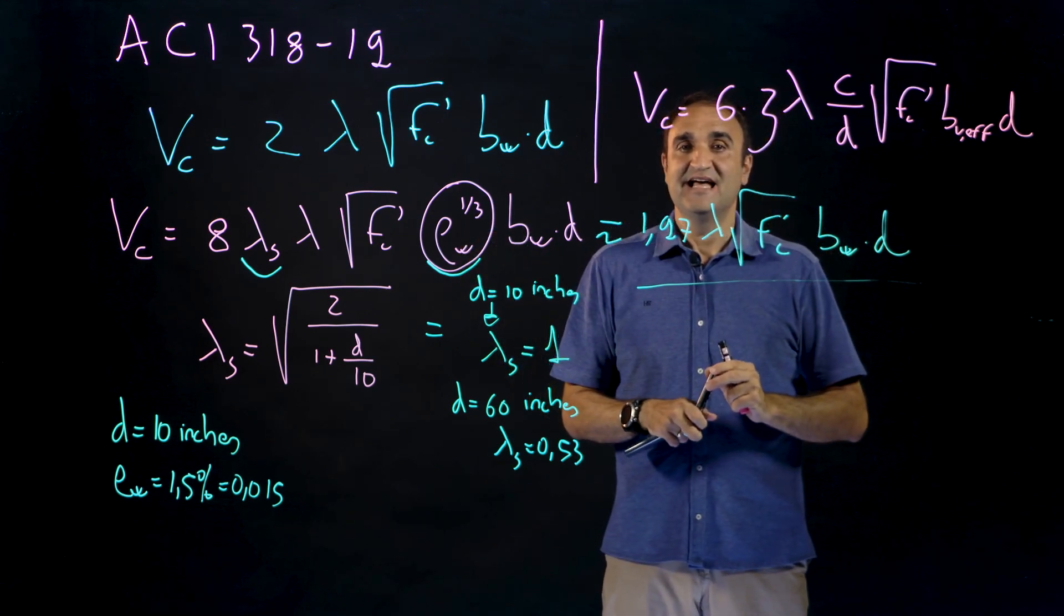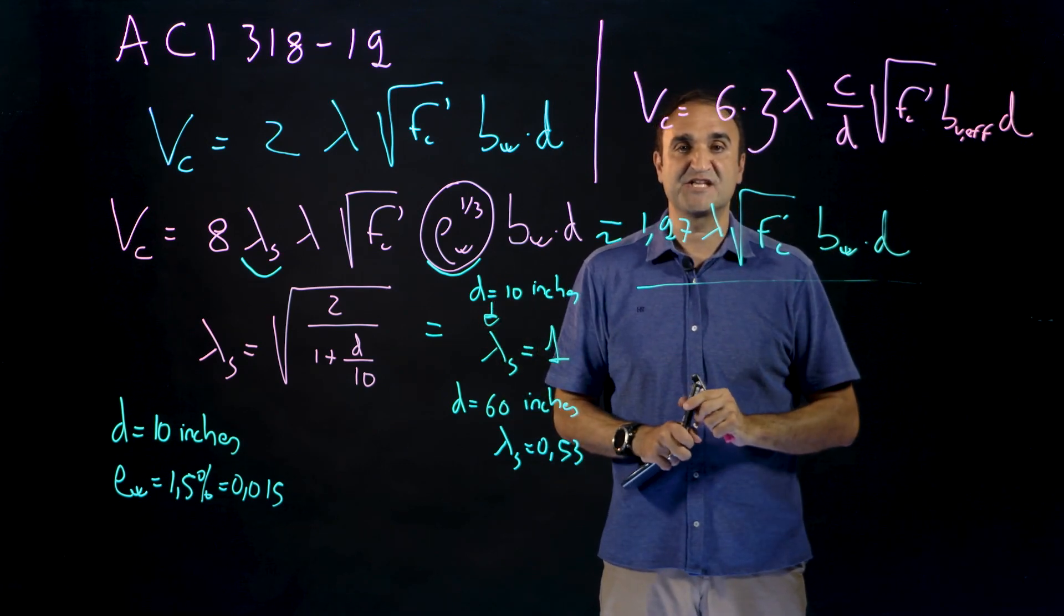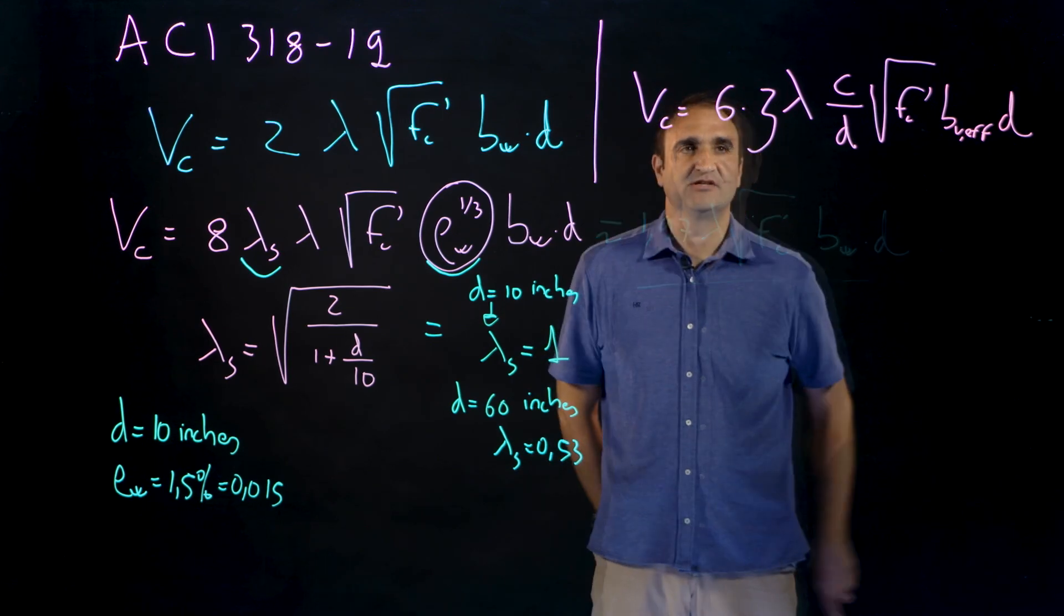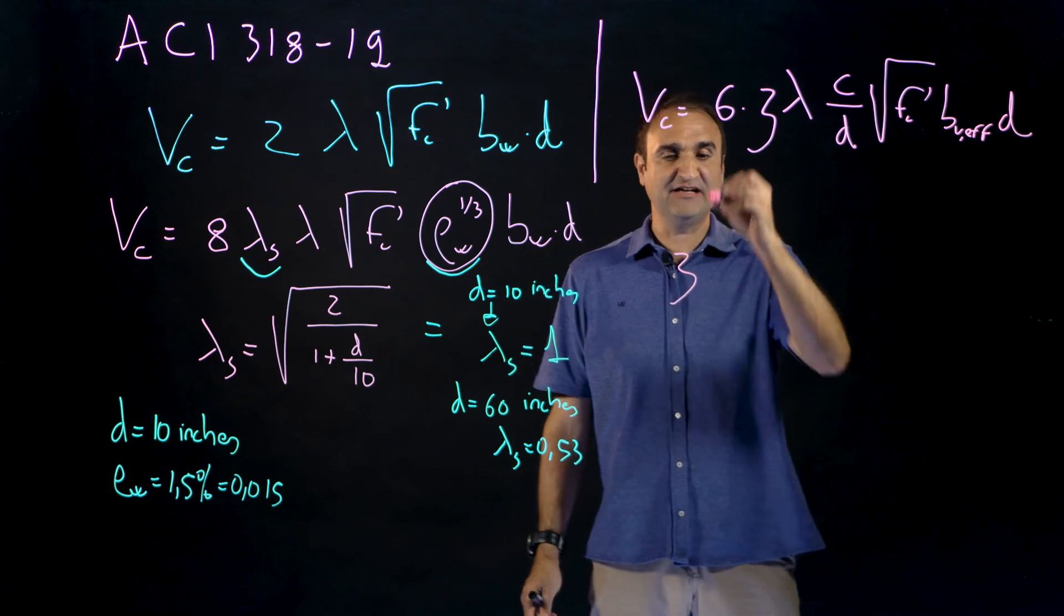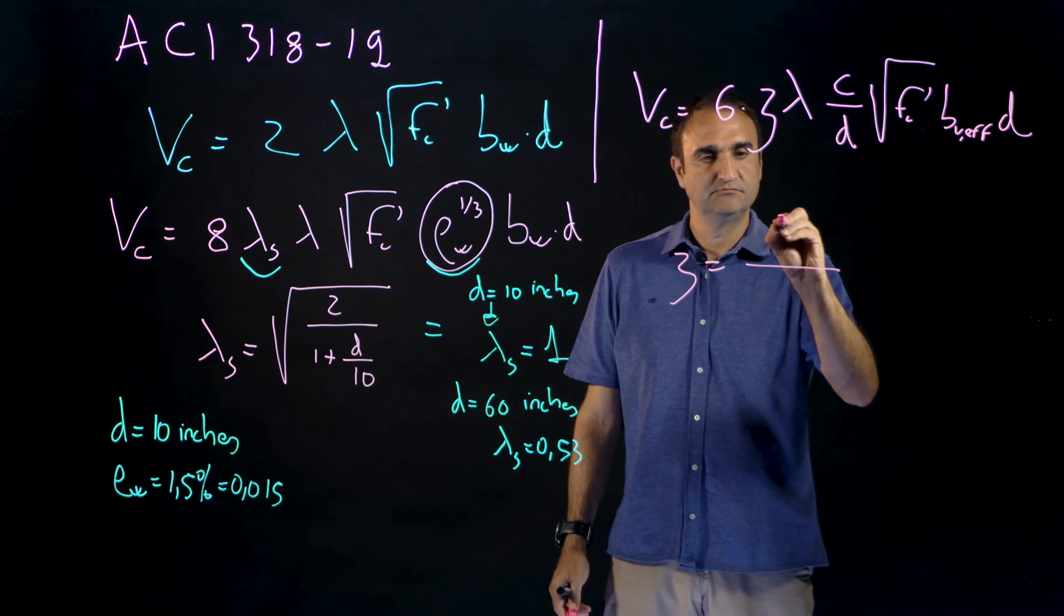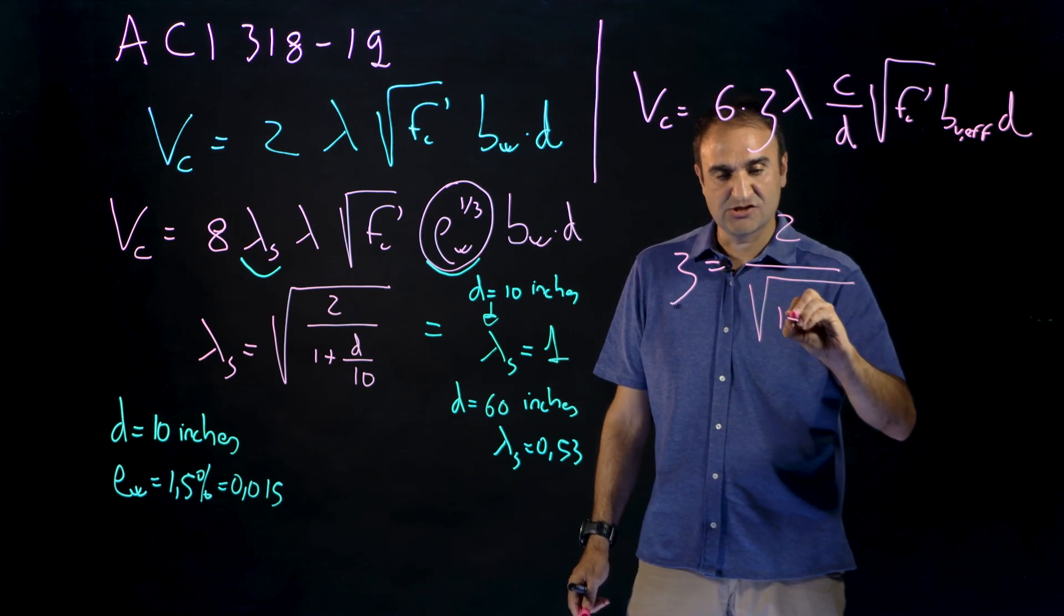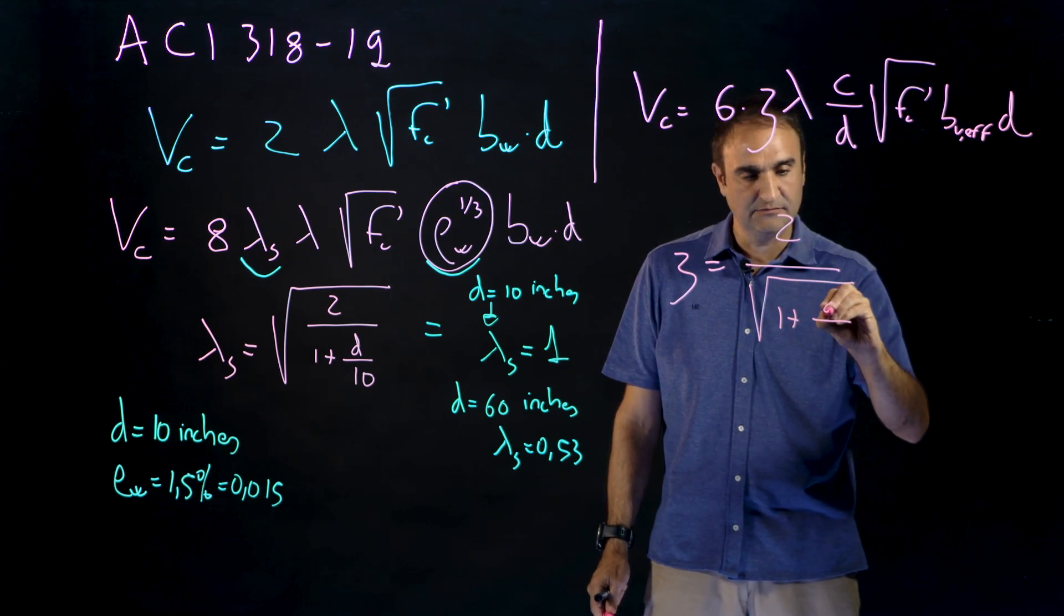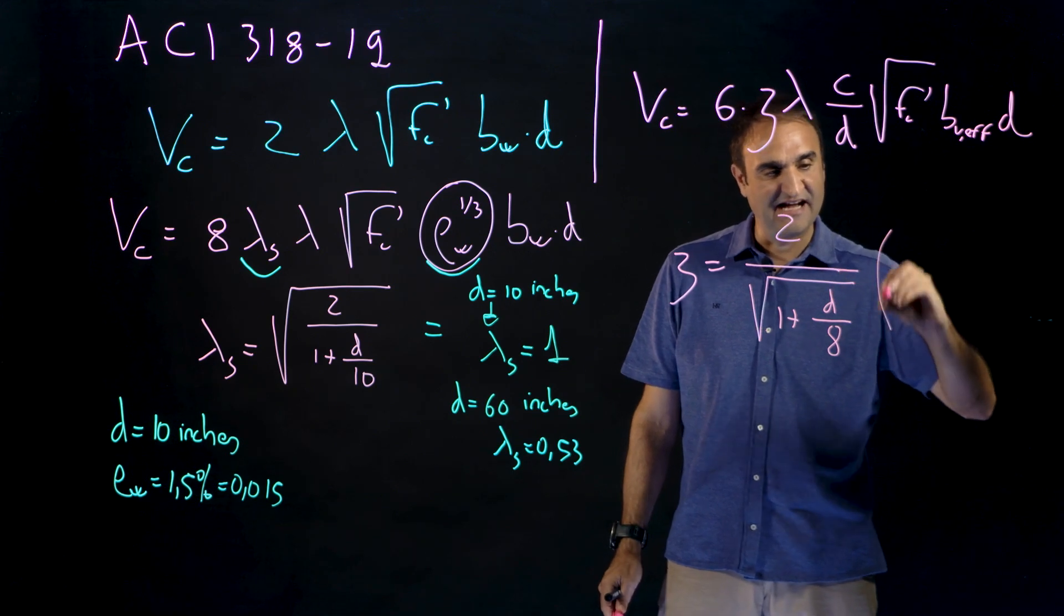I will explain the difference. In this equation the size and slenderness factor proposed was equal to this equation here, also derivative from the work by professor Bazant, 1 over 8 times, and here we had a factor like this depending on the shear span.